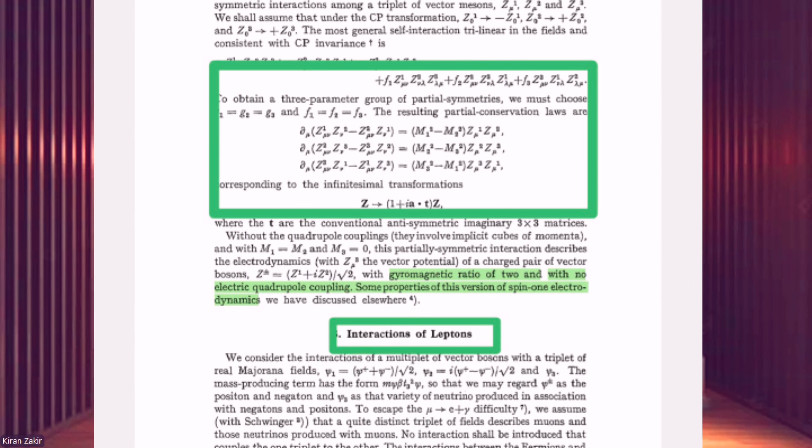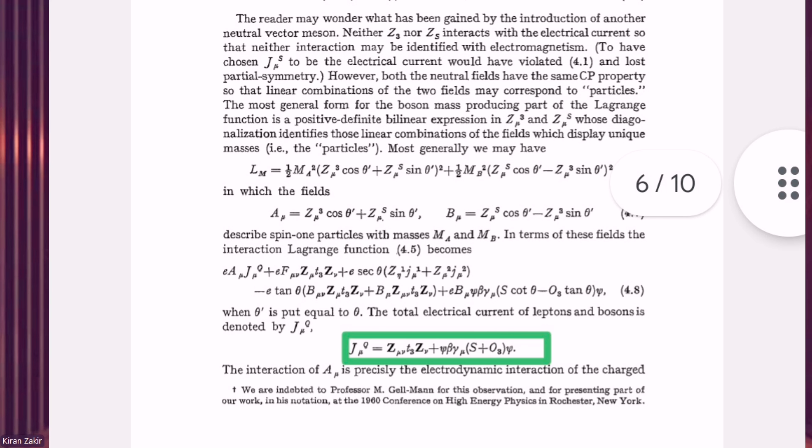Glashow's model also incorporated the concept of quarks, explaining their behavior under weak interactions — a critical step in developing a comprehensive understanding of particle physics. On the mechanism for symmetry breaking, while Glashow's initial paper did not fully develop this mechanism, it laid the groundwork for the later inclusion of the Higgs mechanism by Salam and Weinberg. Most importantly, the model provided specific predictions that could be tested experimentally, making it a crucial step towards a complete electroweak theory.